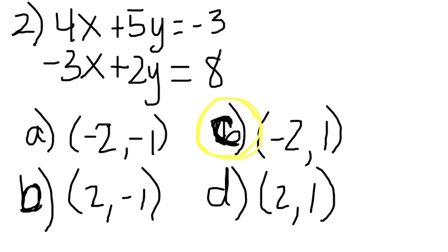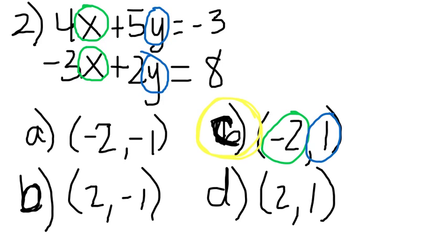If you substitute negative 2 in for x for both of these equations, and 1 for y for both of these equations, you would end up getting the correct values. 4 times negative 2, negative 8, plus 5 times 1, which is 5. Negative 8 plus 5 gives me negative 3, so that solution works. For the second equation, substitute negative 2 for x, you get negative 3 times negative 2, positive 6. 2 times 1, 2. When you add those numbers together, 6 plus 2, you get 8. So you can see that the answer is letter C.